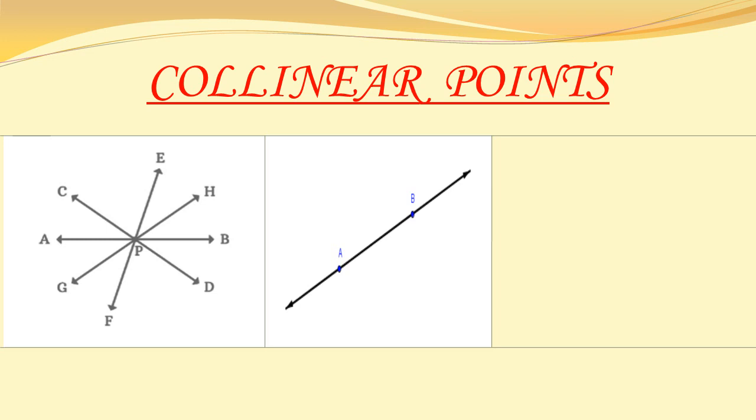Now, here is an interesting one. In figure number 3, one and only one line can be drawn which is passing through the points W, X, and Y, that is line M. So children, by studying these figures, what can we say?